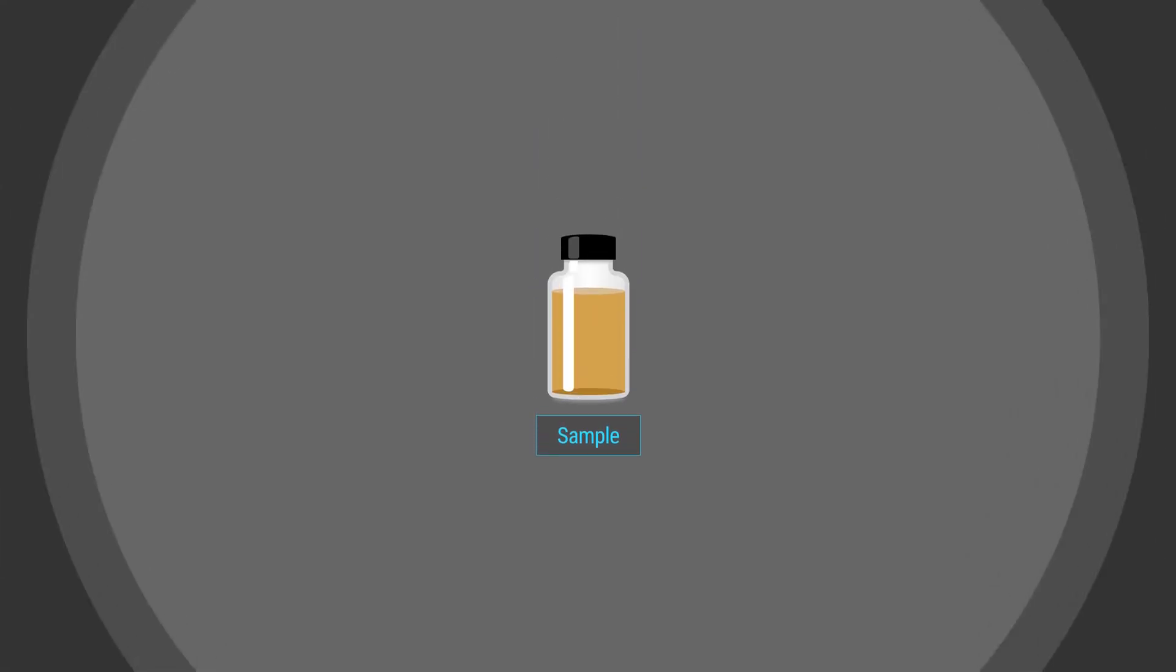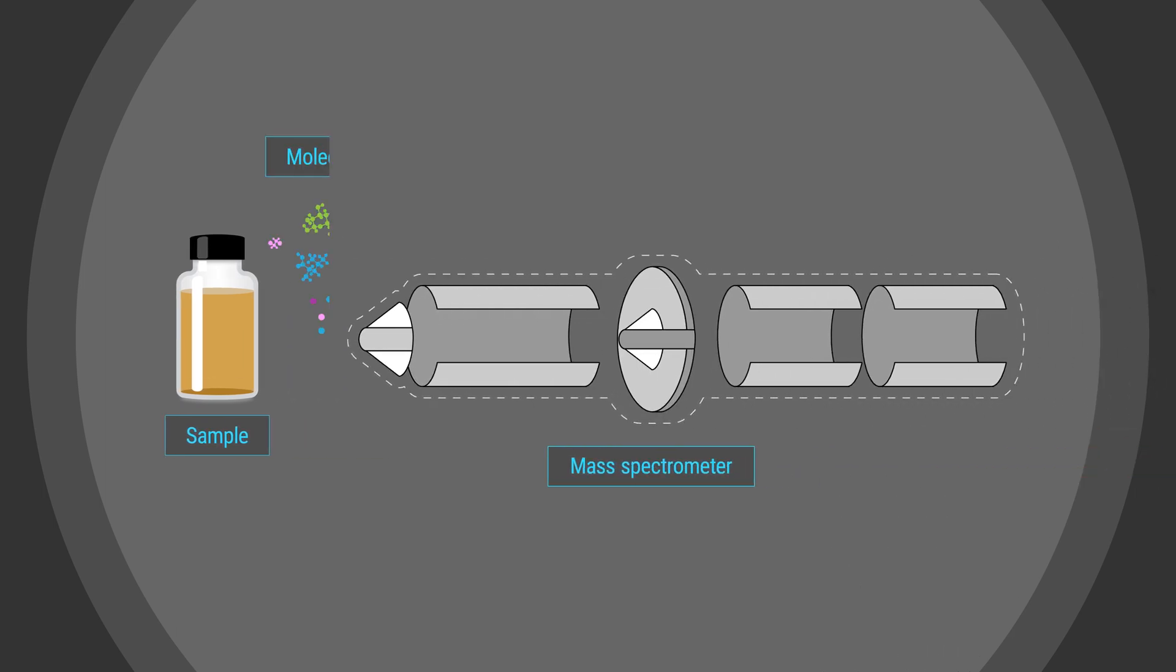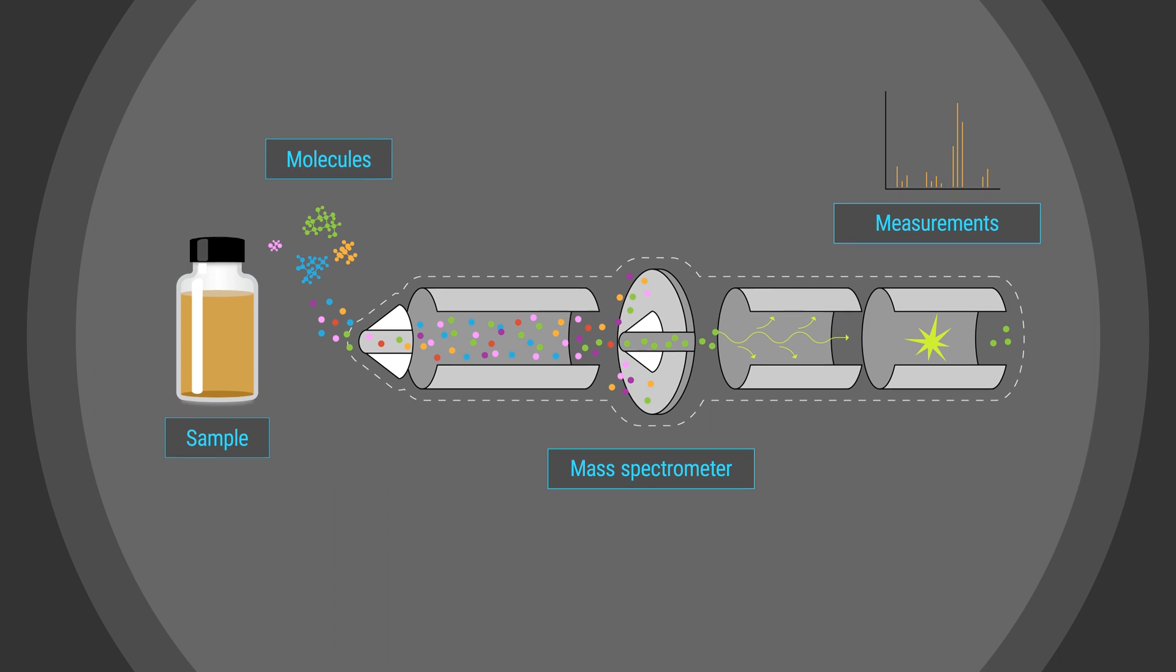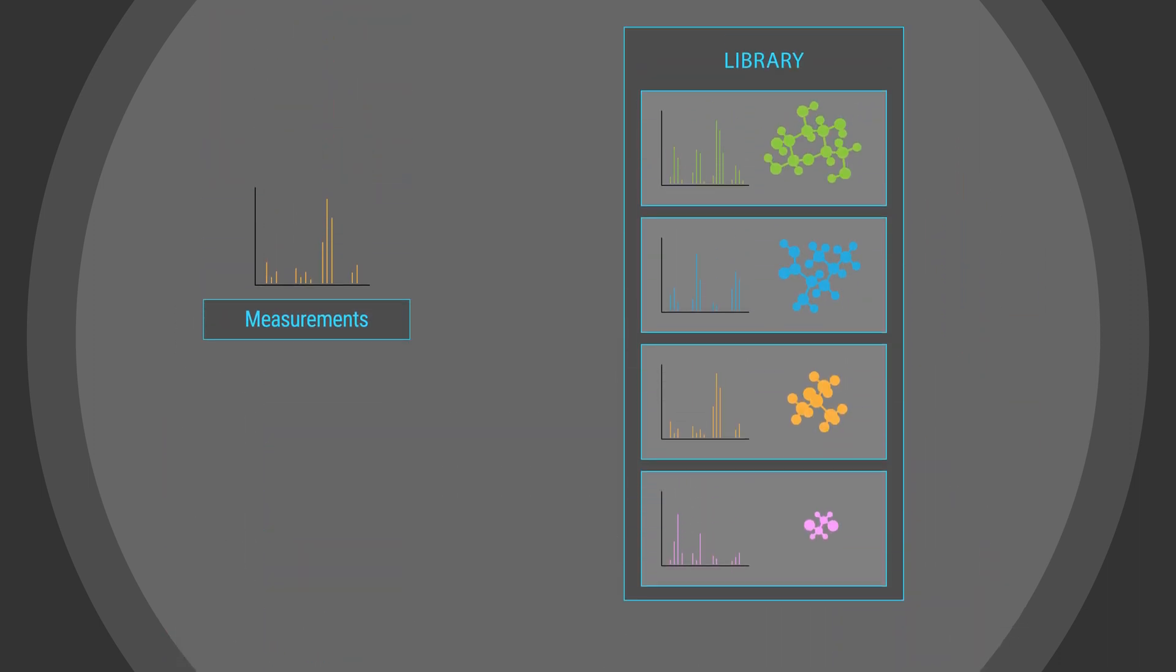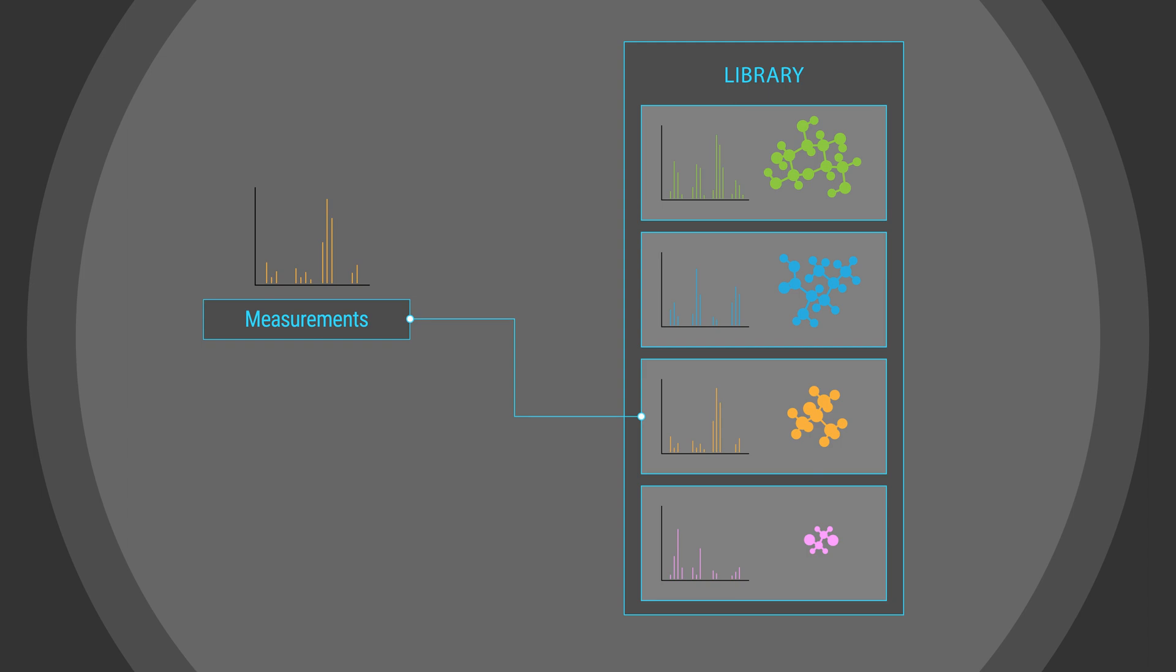Many chemicals are identified using mass spectrometry, a technique that measures the mass and charge of molecules in a sample. If data from those measurements match a chemical in a reference library, we know which molecules are present.